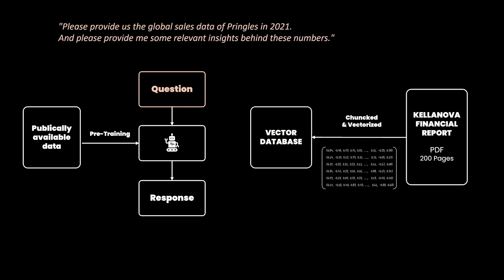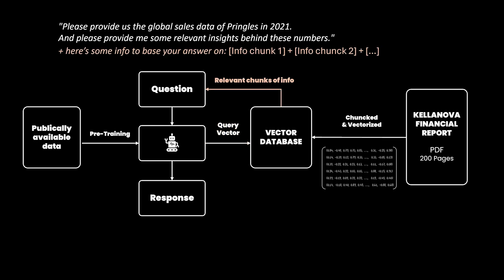Now, when we ask the LLM, 'Please provide us the global sales data of Pringles in 2021, and please provide me some relevant insights behind these numbers,' it will turn the question or input prompt into a query vector. This query vector will help us to pinpoint the most relevant chunks of information in our vector database by using techniques such as cosine similarity to find the chunks of information that are most similar to and relevant for our input prompt. Once the most relevant pieces of information are found, they are retrieved and added to the input prompt.